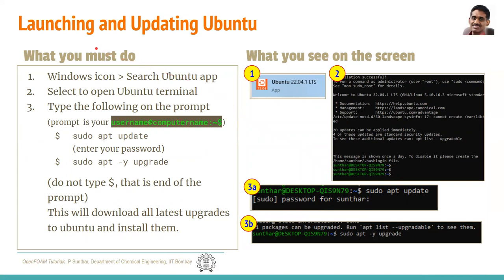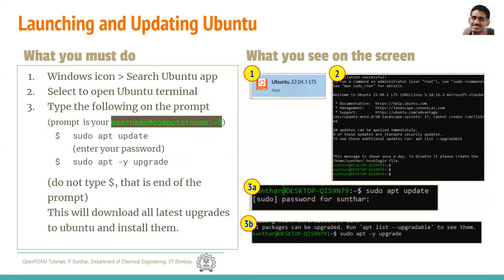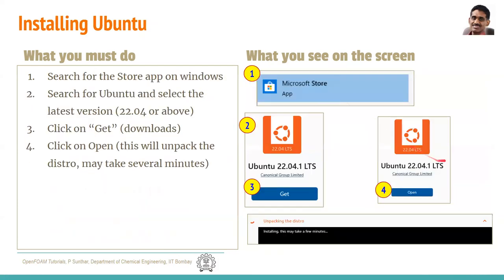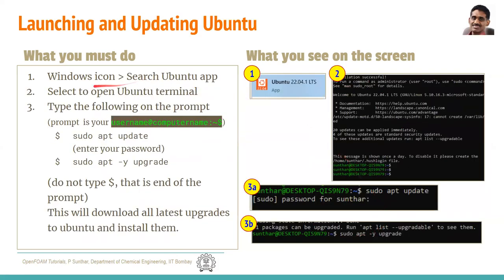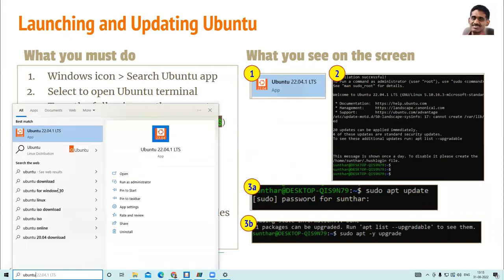Now we're going to launch Ubuntu. Once all this is done — and this could take quite some time depending on your network connection — the Ubuntu installation can take about 20 to 30 minutes, sometimes more on a slower network. Once the Ubuntu installation is complete, you have to launch Ubuntu. Remember that Ubuntu was an app, and we did this installation inside that. Once the installation is complete, you can search for the Ubuntu app in the Windows taskbar.